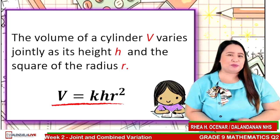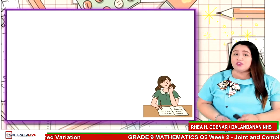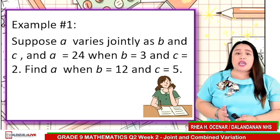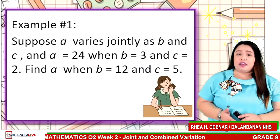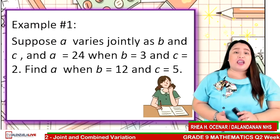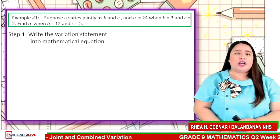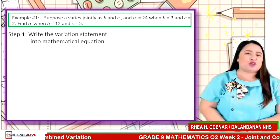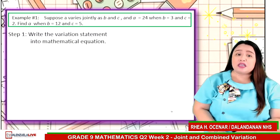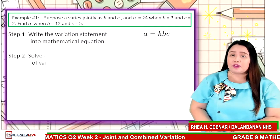After dealing with translating statements into mathematical equations, let us focus on the following problems. Example number one: Suppose A varies jointly as B and C, and A is 24 when B is 3 and C is 2. Find A when B is 12 and C is 5. Step one: write the variation statement into mathematical equation. Since A varies jointly as B and C, we have A is equal to kBC.